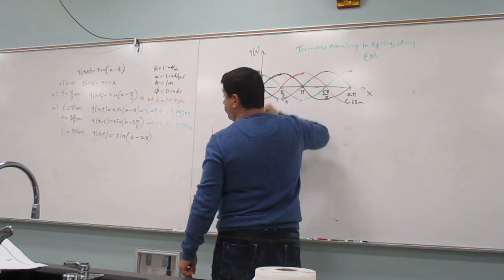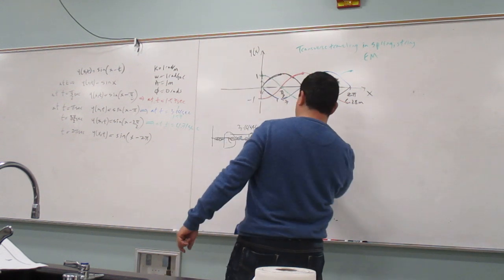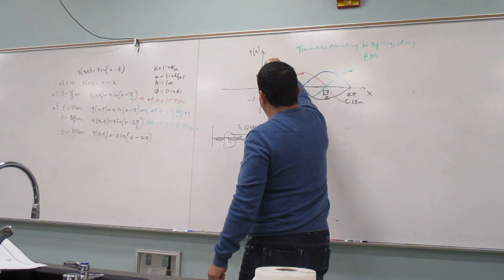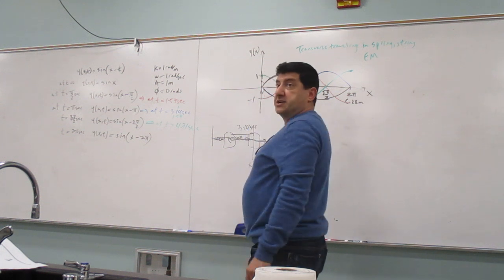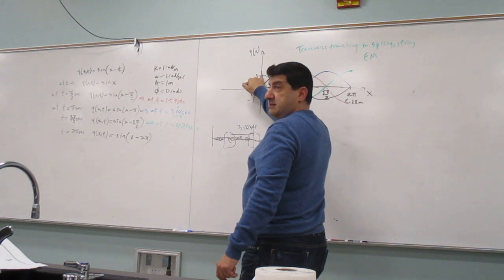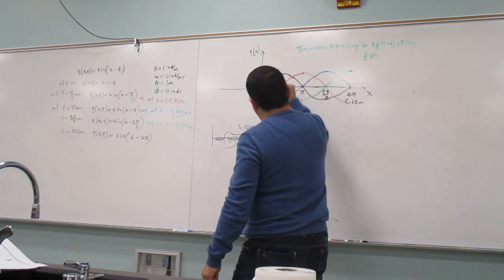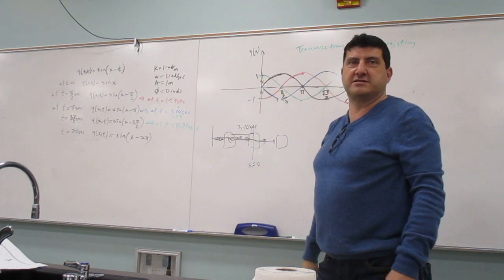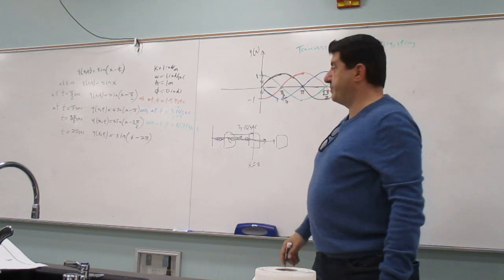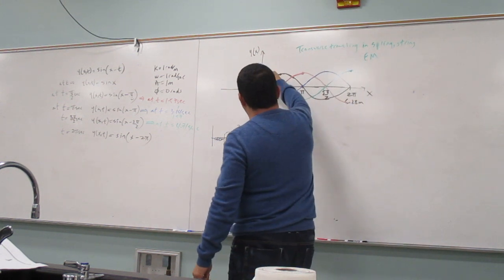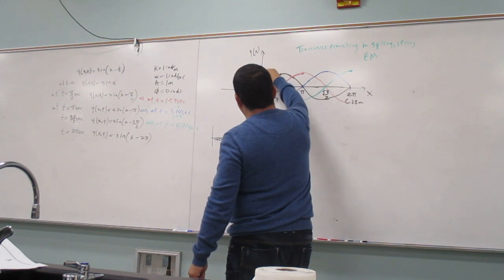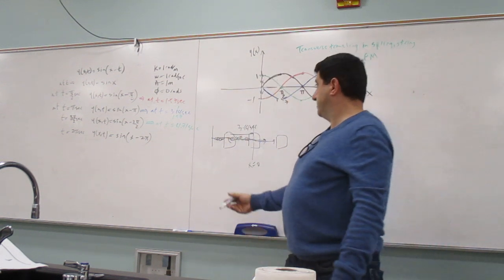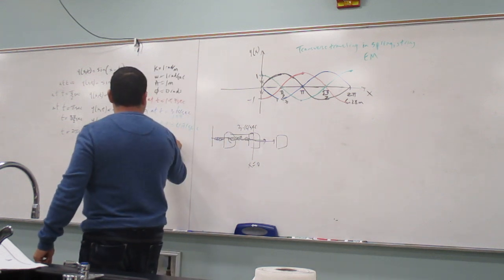Then from 3.14 seconds onward it goes up — like the block going to the right. At 4.71 seconds it reaches its most stretched position. After that it goes back down and completes the whole cycle. So the full cycle — going down, up, and back to the initial point — takes 6.28 seconds.